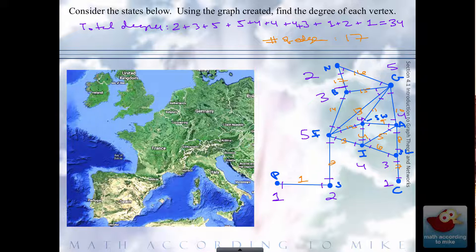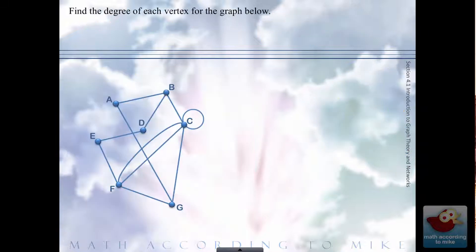So number of edges: 17. Remember, the total degree must be twice the number of edges, always, always, always. So you're again, total degree must be an even number. Let's try another example. What I want you to do is to pause the video.